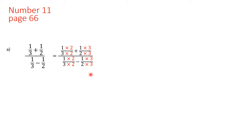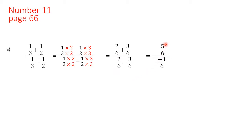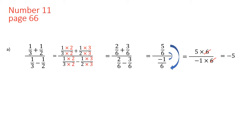I multiply the denominators by each other — 3 by 2 and 2 by 3 — and perform the calculations to obtain fractions with the same denominator. Then I add the fractions in the numerator and subtract the two fractions in the denominator, obtaining 5 over 6 over minus 1 over 6. This is a complex fraction, so I multiply the farthest by each other and the closest by each other: 5 times 6 over minus 1 times 6. I can simplify 6 and 6, leaving 5 over minus 1, which is minus 5.